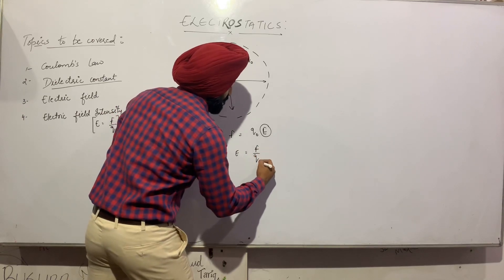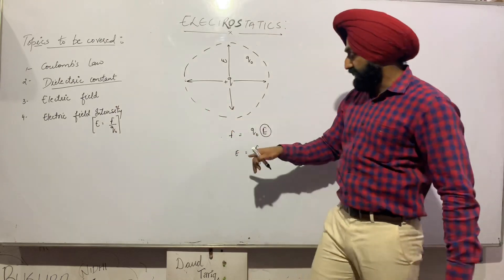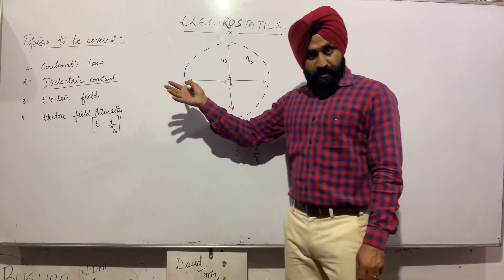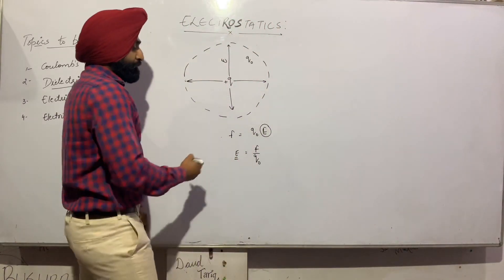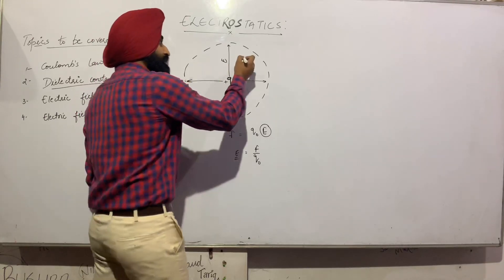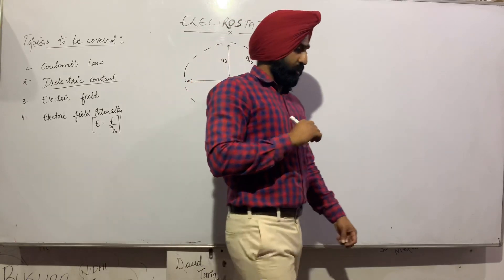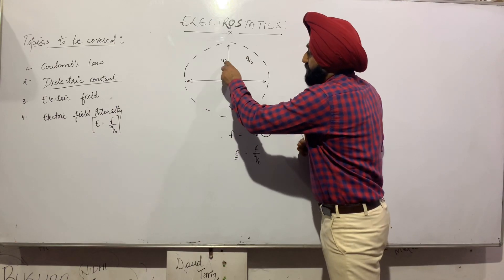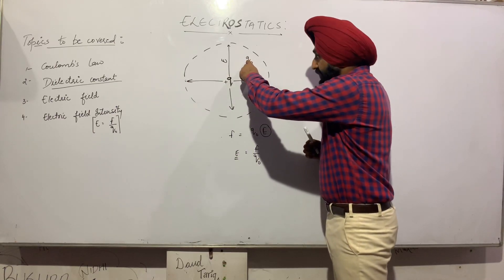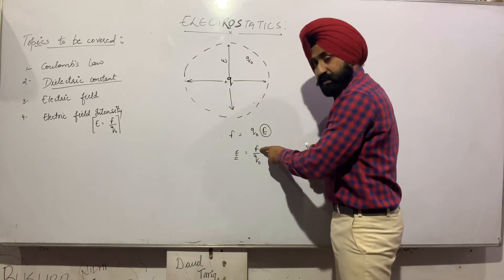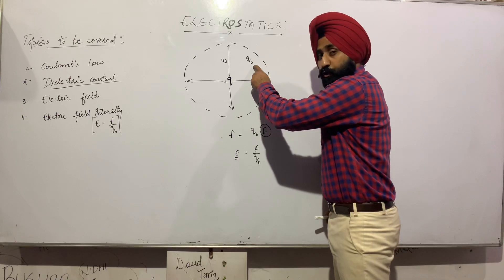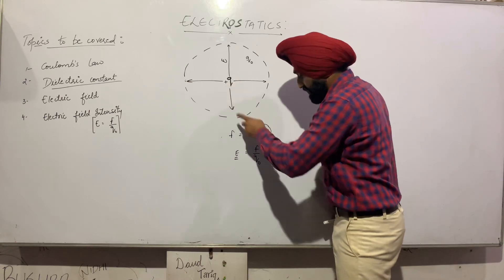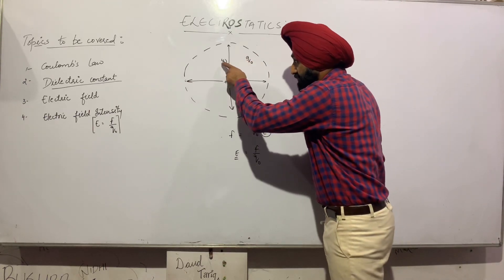Electric field intensity is equal to the force experienced by the test charge divided by the charge itself. So electric field intensity E equals F upon Q-not. This means that the electric field E at a particular point is due to the source charge Q — calculated as force F divided by Q-not at that point.